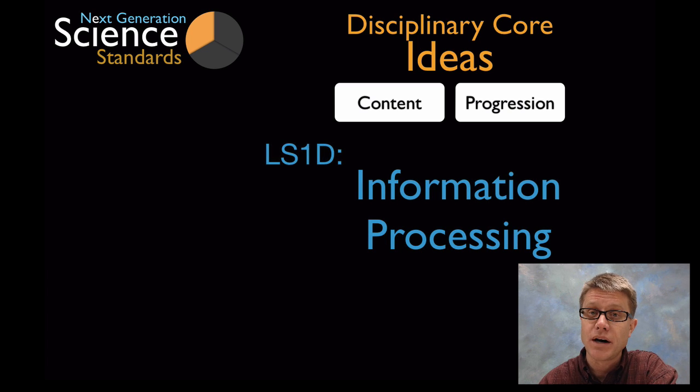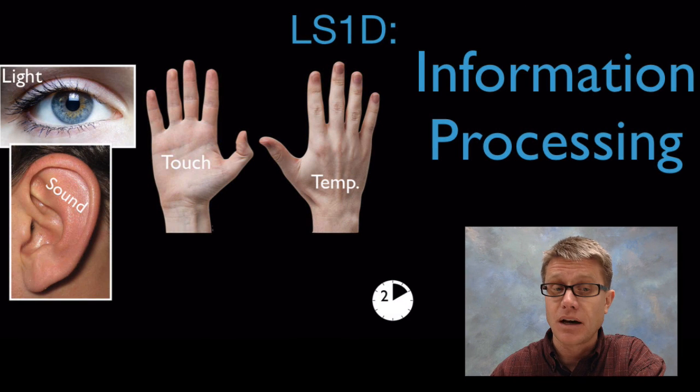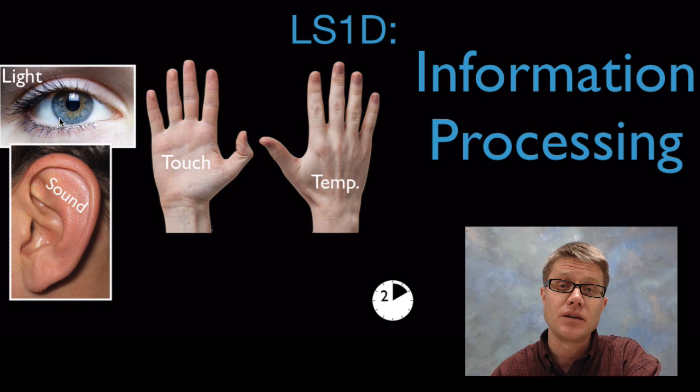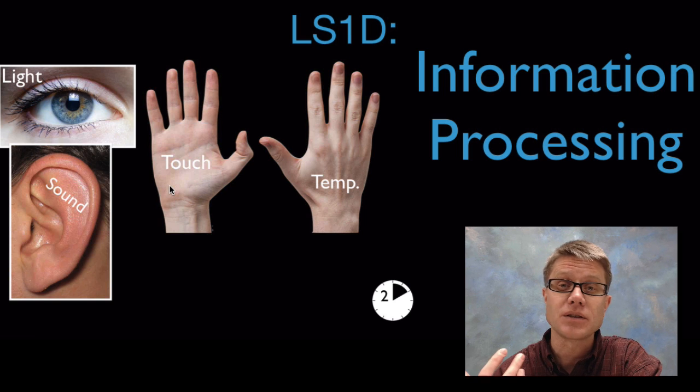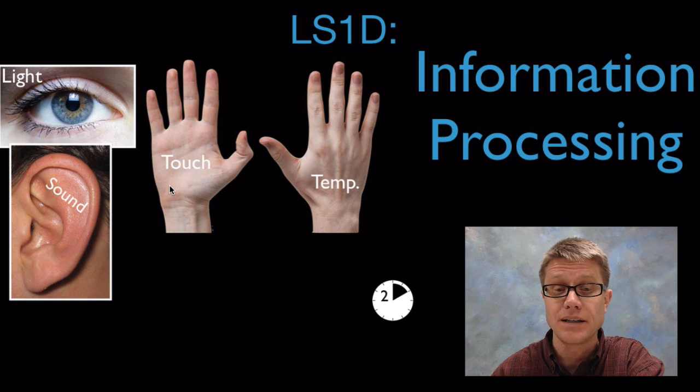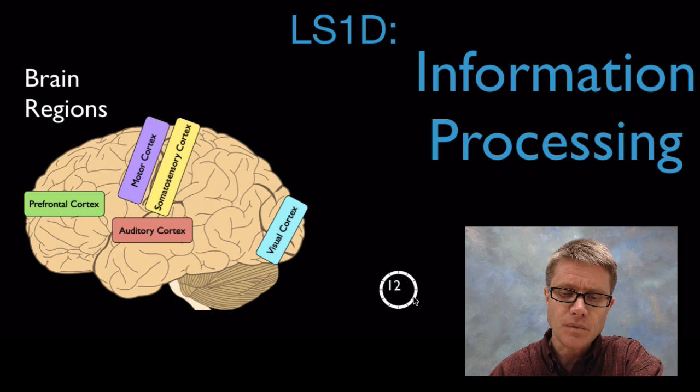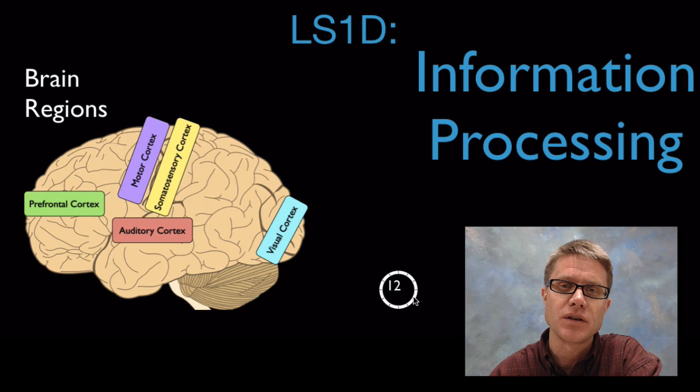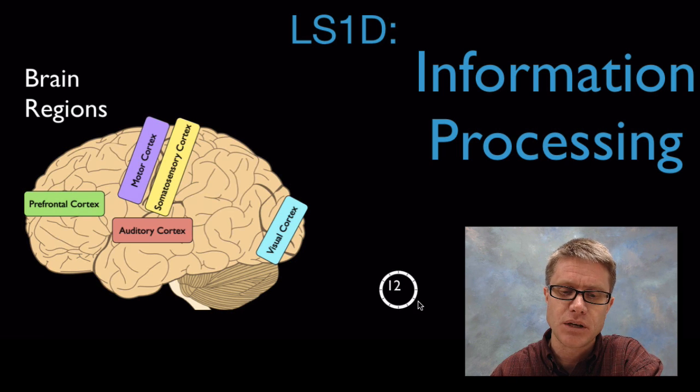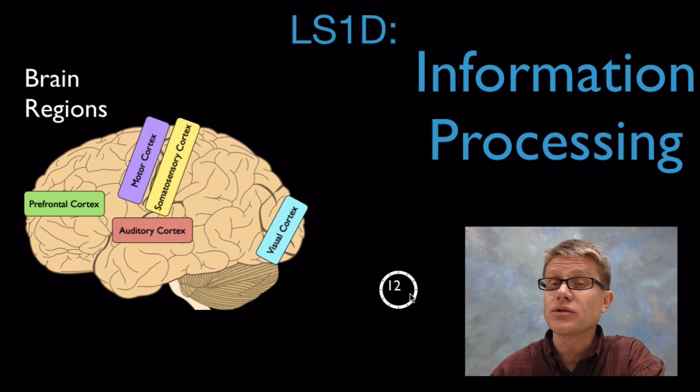For example this is life science 1, disciplinary core idea 1D on information processing. In the elementary level you're going to teach students that they have parts of their body that they can use to collect information. Like their eyes take in light, their ears take in sound, and their hand can take in touch and also sense temperature. But then as you work through middle school and on to high school you're going to increase that information around this core idea. So to the point where you're in high school you're going to be talking about the brain and how those signals are received in the brain and where they go in the brain, how we form memories and how we form actions based on that. As you look at my videos I'm going to have little icons in the corner that show you what students should understand by the time they graduate high school.